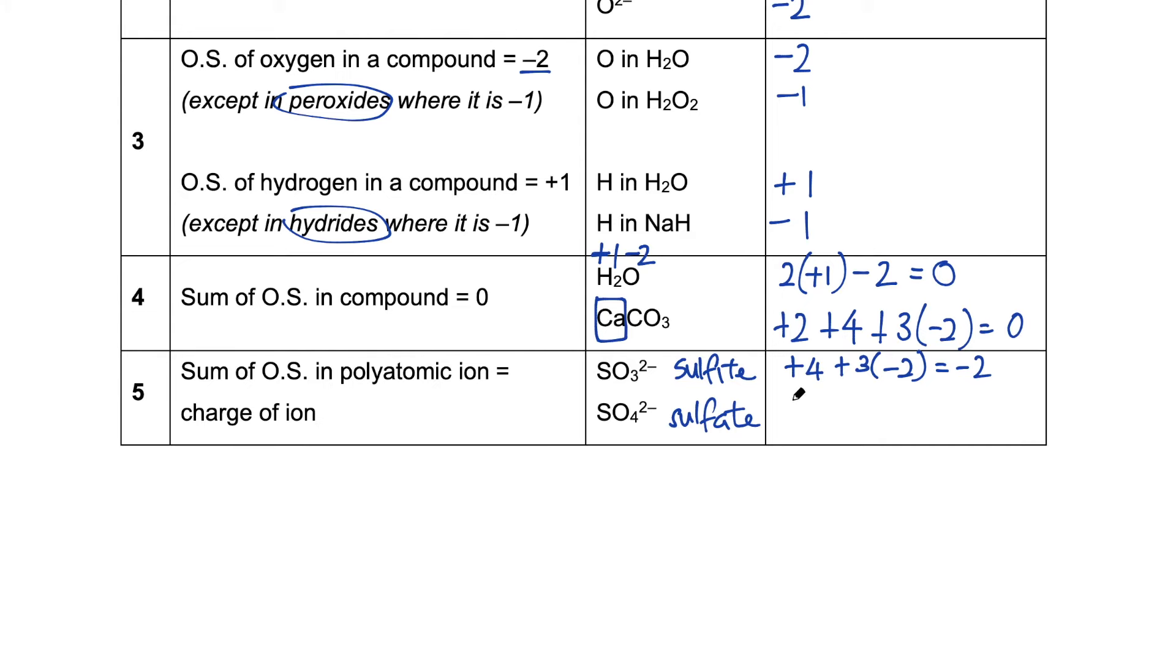For sulfate, the oxidation state of sulfur is plus six. We have four oxygen, contributing a minus two each. And the sum should also be equal to the charge.